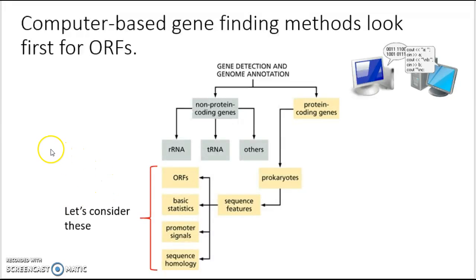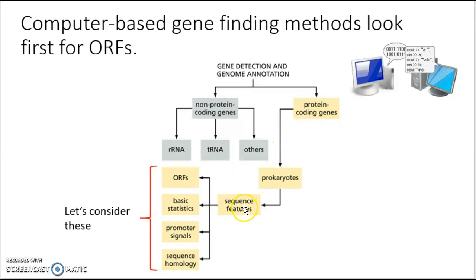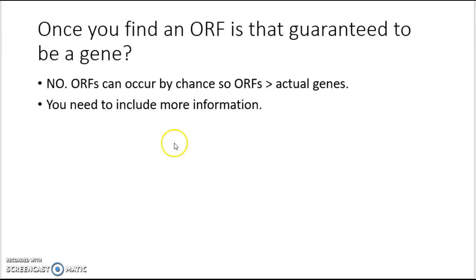There are computer-based gene-finding methods to look for ORFs, and these primarily apply only to protein-coding genes. I'm not going to talk today about non-protein-coding genes like the ones that encode functional RNA. If you are looking for protein-coding genes in prokaryotes and eukaryotes, you look at the sequence, and the first thing you look for are ORFs. Once you've found the ORFs, you look for these other aspects to see if the ORF really is — or is likely to be — a gene. Again, there are more ORFs in a genome than actual genes, so you need additional information to test the hypothesis that the ORF is a gene.